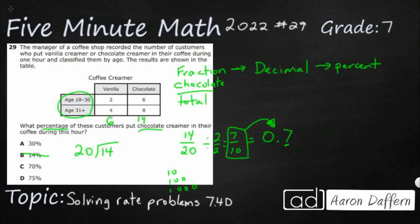Then, to turn that into a percent, we take our decimal and we move it over two times. So, we're going to move it over once, twice, and we're going to equal 70%. And that is our answer, C.